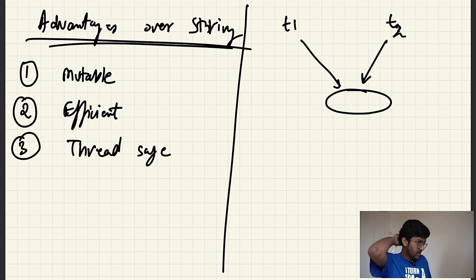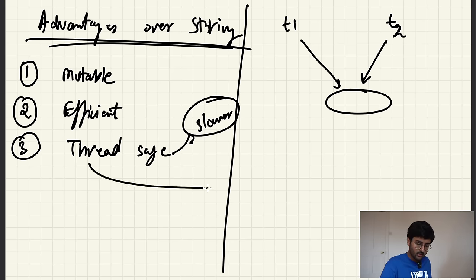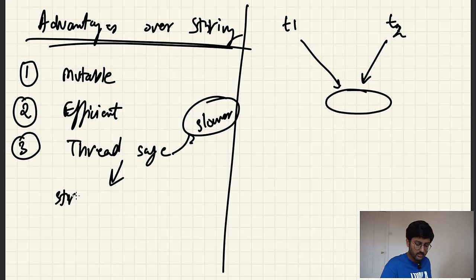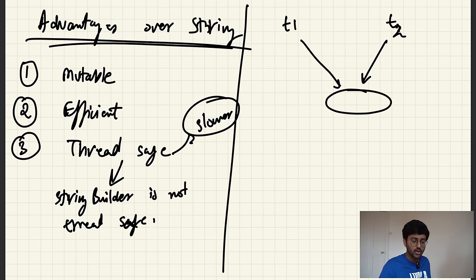Thread safety also makes StringBuffer a little slower because only one thread can access the object at one time. The key difference between StringBuffer and StringBuilder: StringBuilder is NOT thread safe. So in short — if you are working with multiple threads and need thread safety, use StringBuffer. If you are not working with multiple threads and need it to be faster, use StringBuilder.